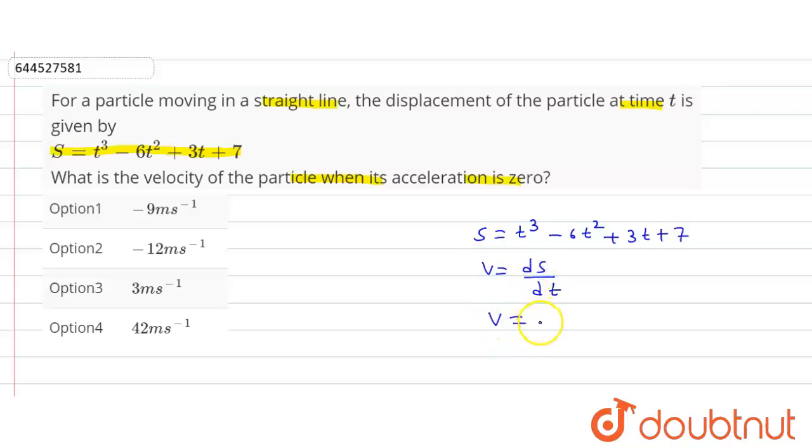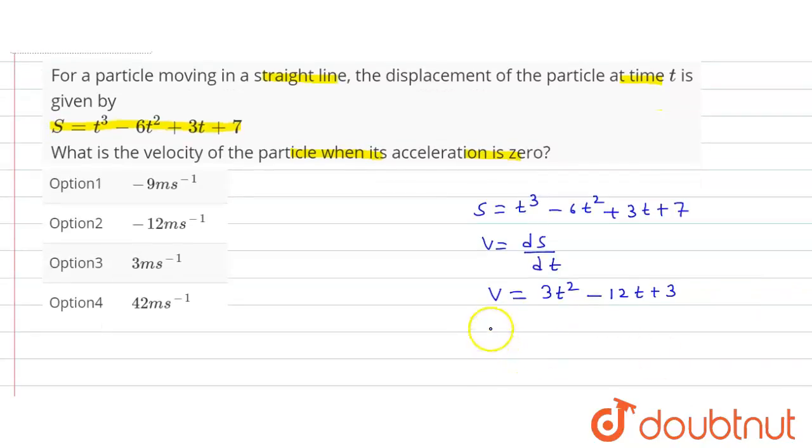V will be velocity 3t square. When we differentiate this S with respect to t, this will be 3t square minus 12t plus 3, and this constant will be zero. So this is the velocity.